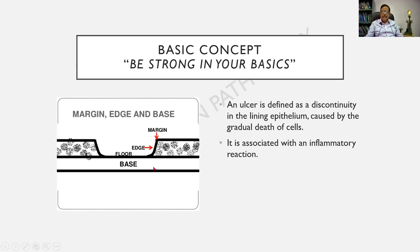What is an ulcer and what are the parts of an ulcer? A repeatedly asked question. An ulcer is defined as a discontinuity in the lining epithelium — it can be skin or mucosa — caused by the gradual death of cells. When you cut your skin with a knife, it is not an ulcer; it has to be gradual and associated with an inflammatory reaction. Regarding the parts of the ulcer: always there is a margin — a two-dimensional rim of the lesion. The edge is the side or wall of the ulcer. The floor is what we see, and the base is the tissue it rests upon. These parts — margin, edge, floor, base — will repeatedly come up in surgery as well.